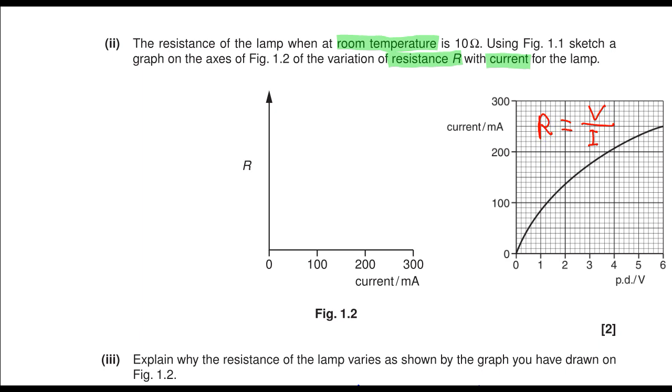Putting that on this set of axes, we need to start with 10 because we are given that at room temperature the resistance is 10. So when there is no current, there will be some resistance, and the resistance would increase.